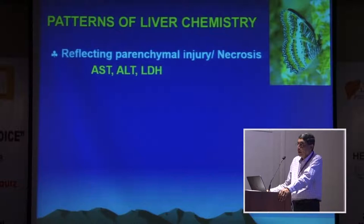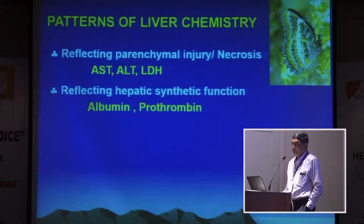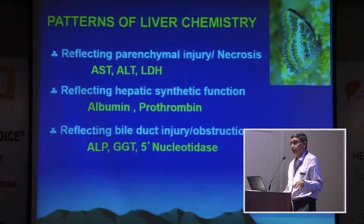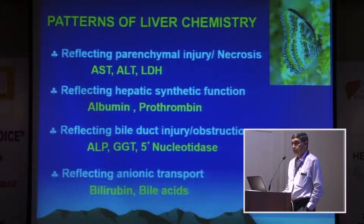There are various patterns of liver injury. One reflects parenchymal injury or necrosis — hepatocyte-related — where AST, ALT, and LDH are the three tests that identify that pattern. Reflecting hepatocyte synthetic function: short-term is prothrombin time, and medium to long-term is albumin. Reflecting bile duct injury or obstruction: ALP, GGT, and 5'-nucleotidase. Lastly, tests reflecting anionic transport across the hepatocyte: bilirubin and bile acid.